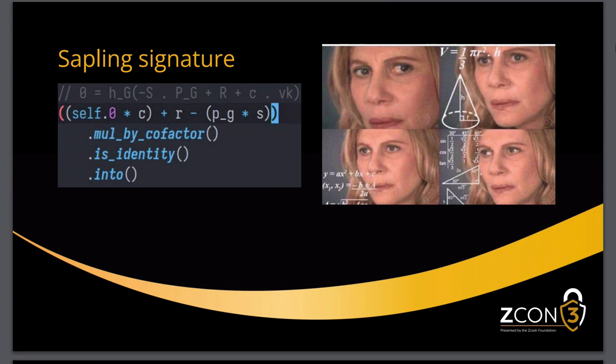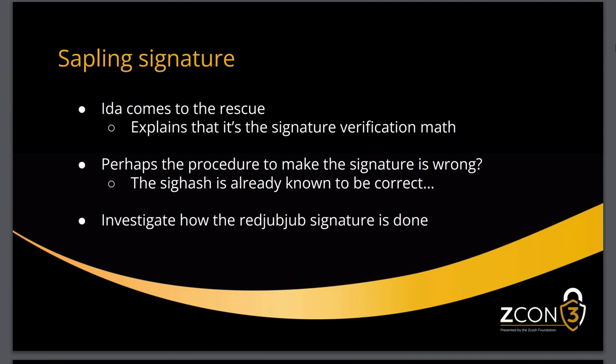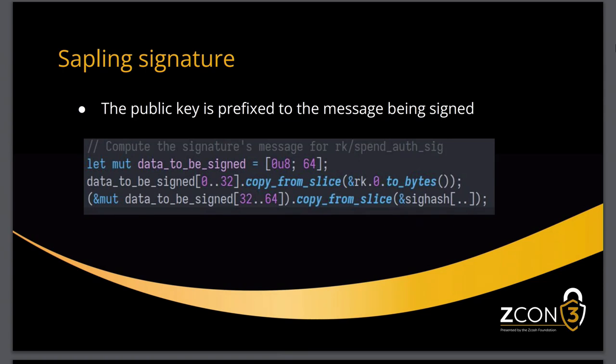We investigated the binding signature first, but that was okay since the outputs were working — we could have a shielded output, but not a shielded input. We eventually figured out the issue was in the spend. We reproduced the failure locally to add logging and narrow down the exact line, and found the signature verification math. After Ida explained what it meant, it became clear there was a problem with the signature, even though we had verified everything matched.